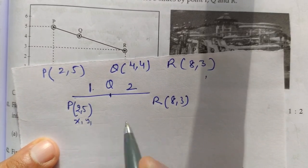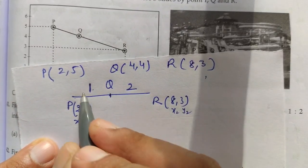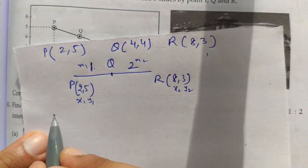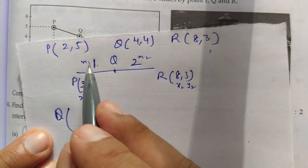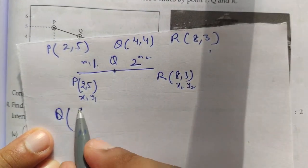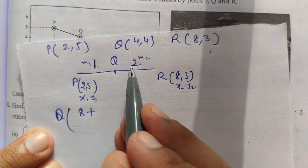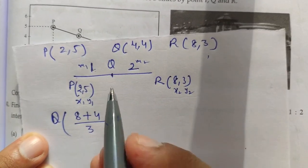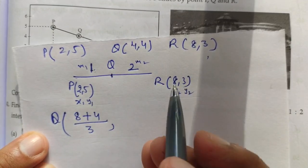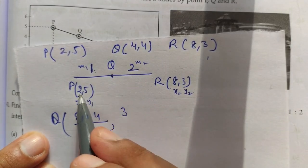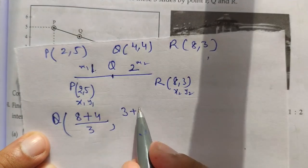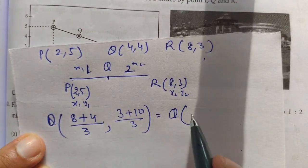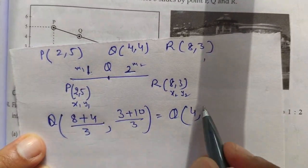This is x1, y1; this is x2, y2; this is m1 and this ratio is m2. The formula is: x = (m1·x2 + m2·x1) / (m1 + m2) = (1×8 + 2×2) / 3 = (8+4)/3 = 12/3 = 4. And y = (m1·y2 + m2·y1) / (m1+m2) = (1×3 + 2×5)/3 = 13/3. So the coordinates are (4, 13/3) — this is the correct answer.